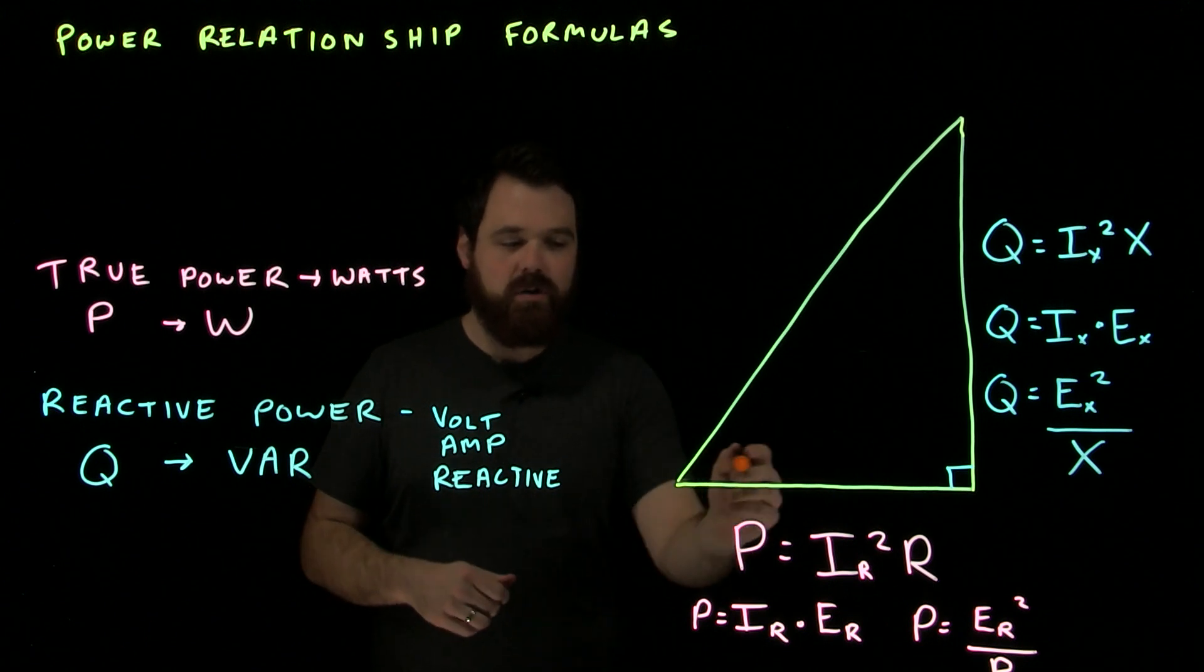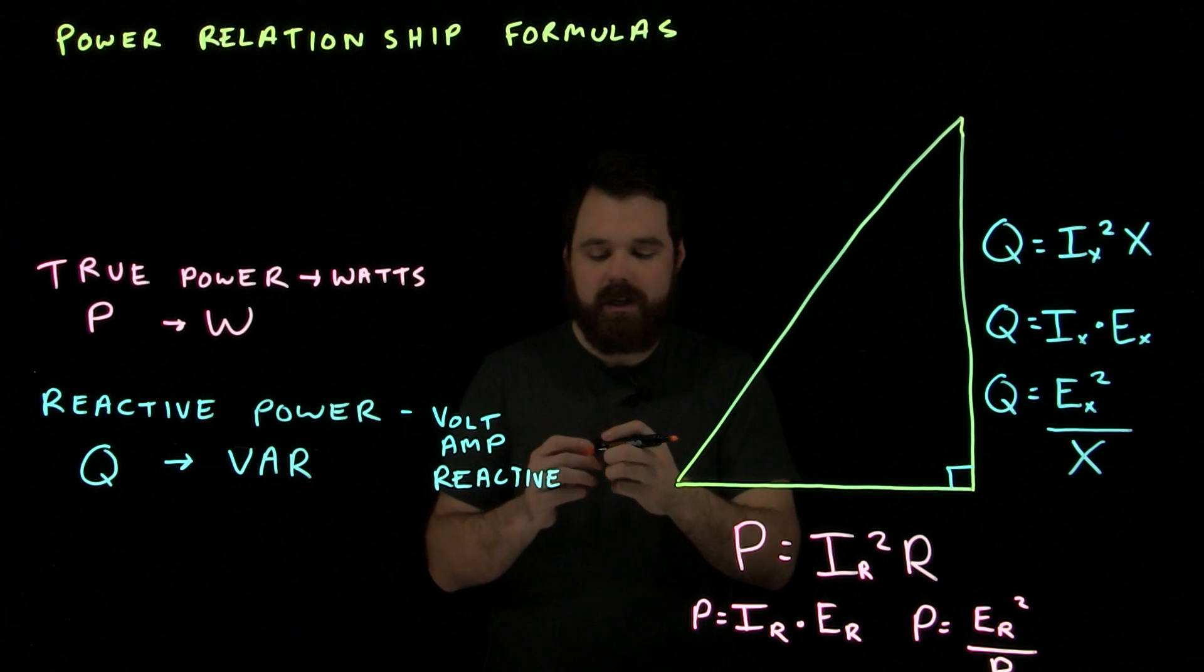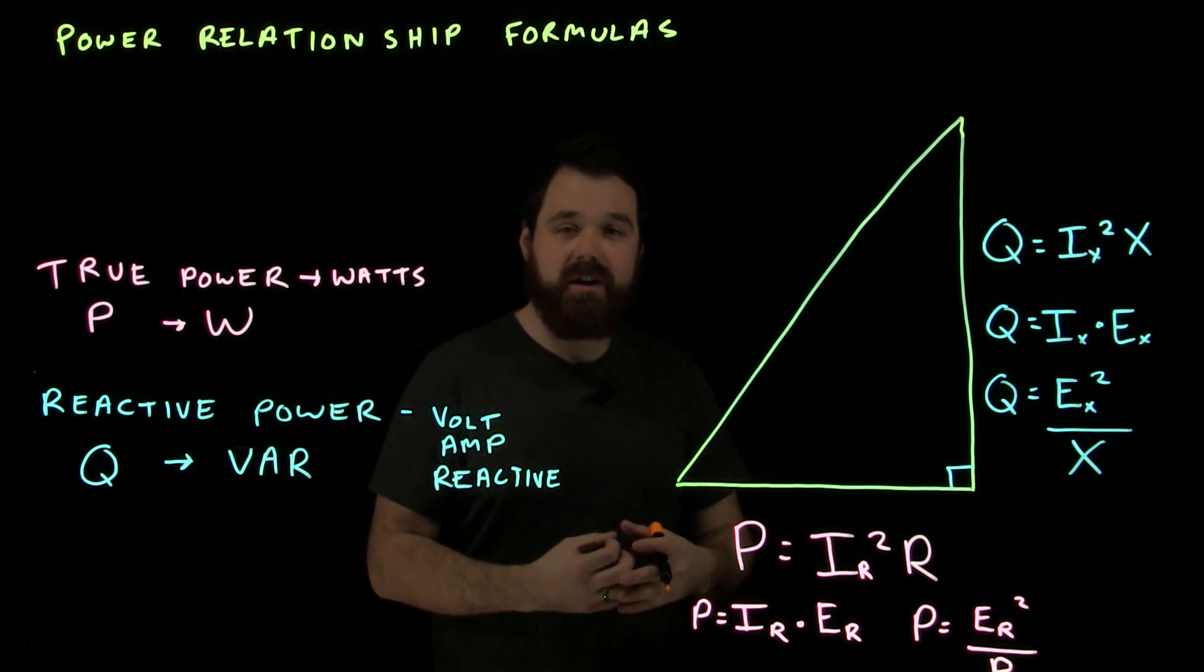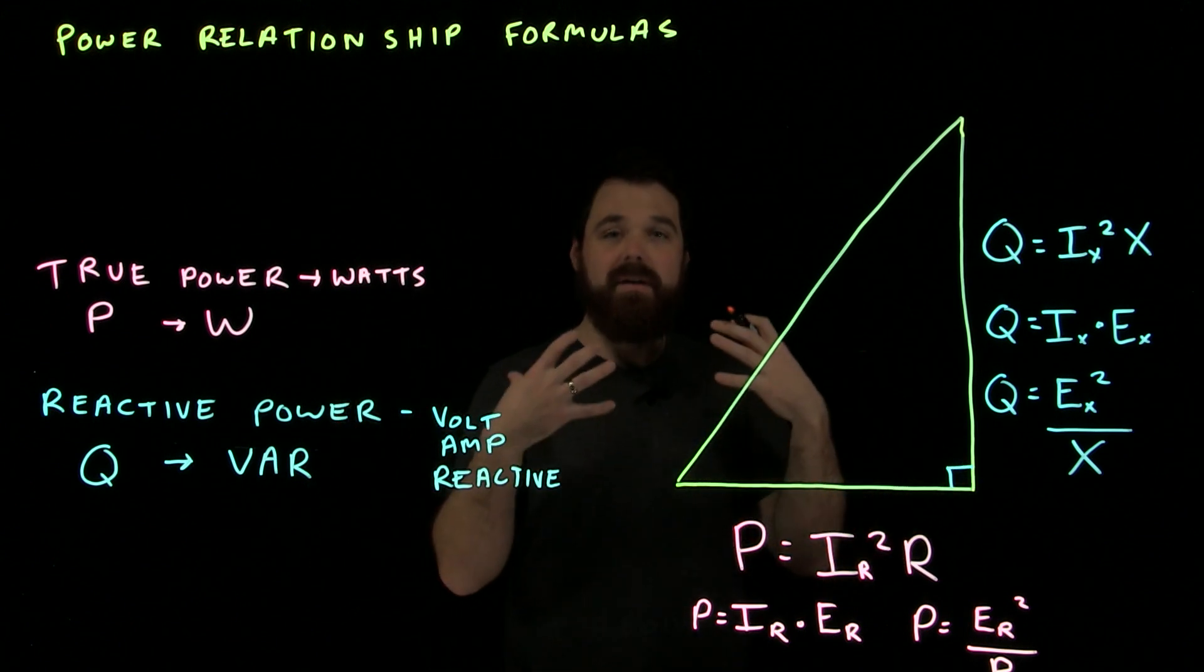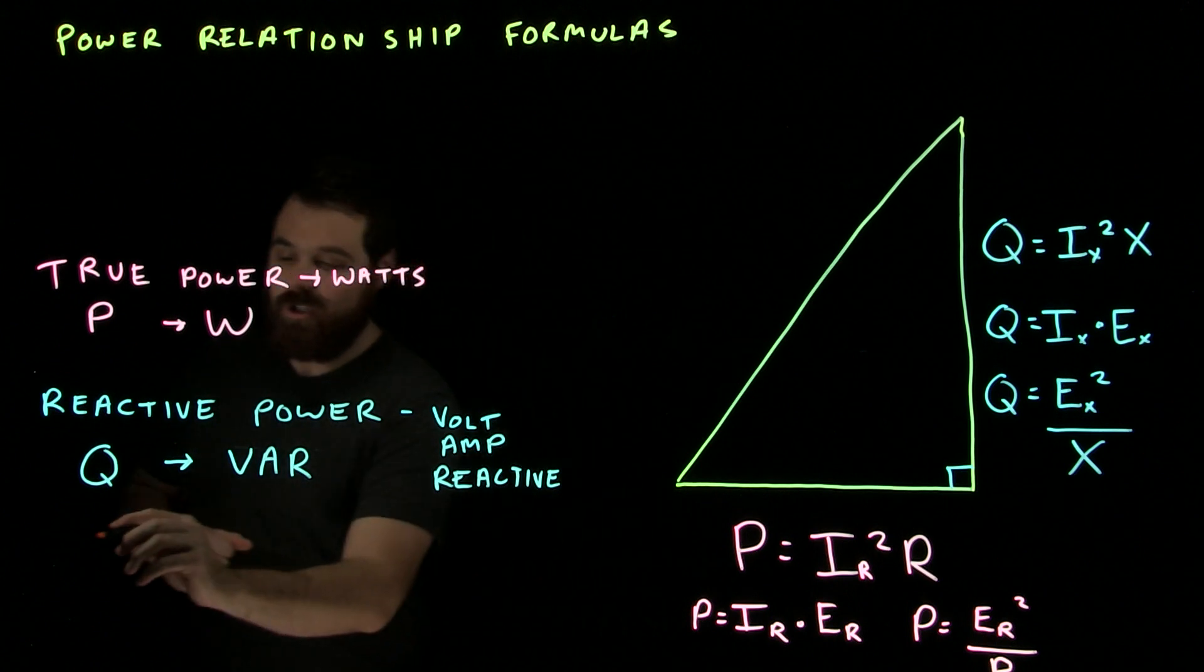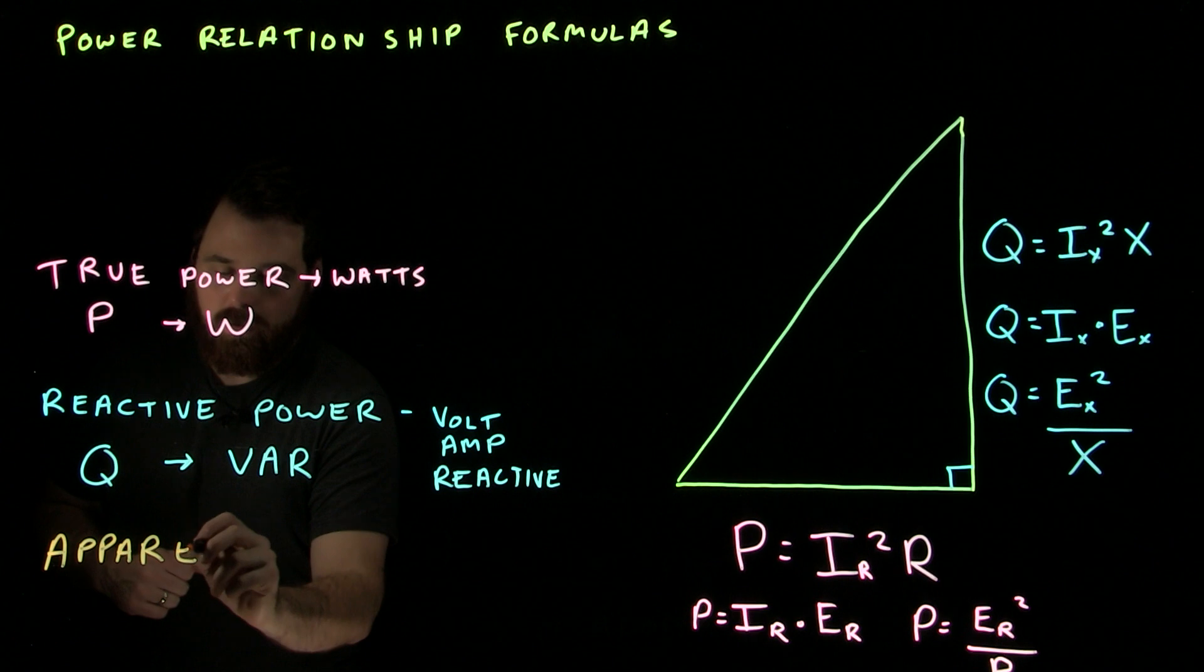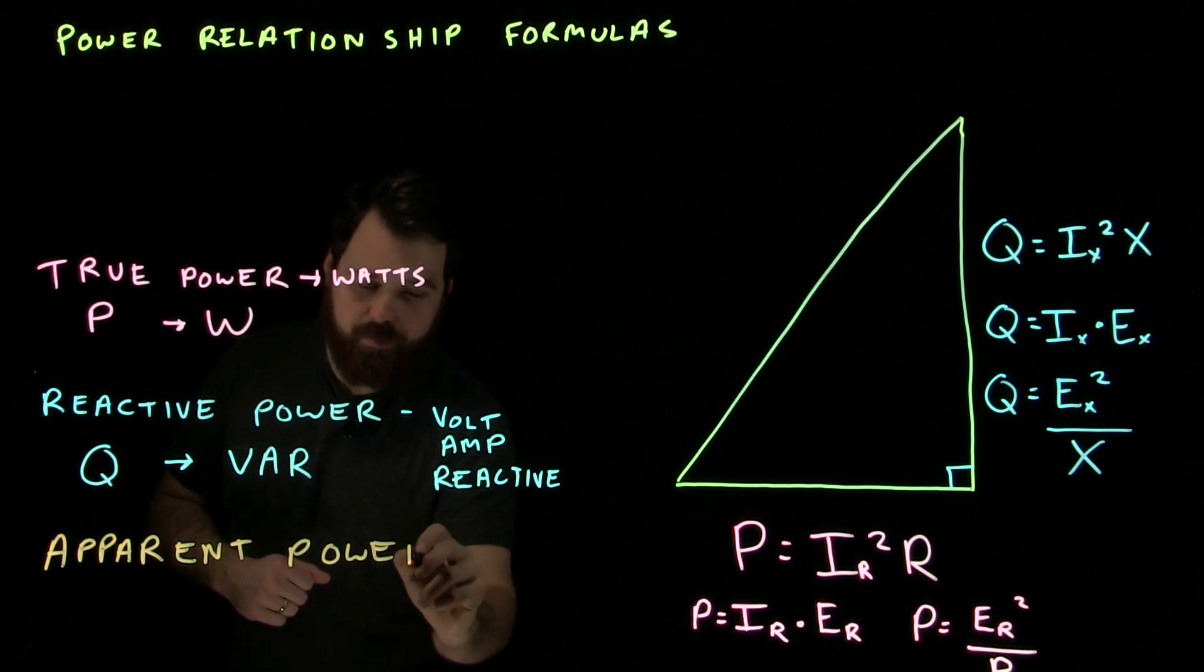Now, the very last thing, we know triangles have three sides. What we see is this final side is the combination of the two, the total current and the total voltage in a circuit, whether it's due to resistance or whether it's the reactants. We have a total voltage and a total current. So, we get something called apparent power.